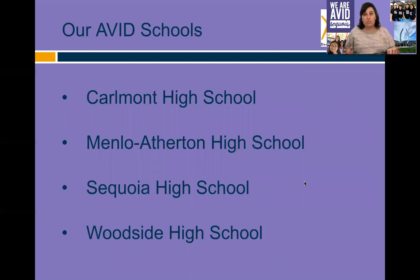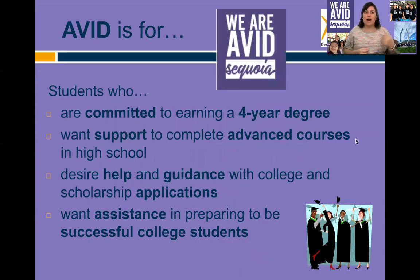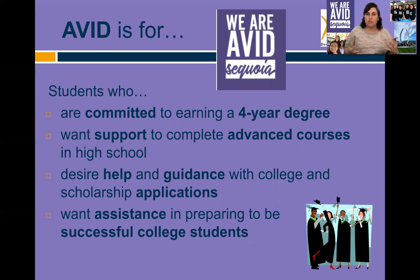In the Sequoia Union High School District, if you want to take AVID as an elective, the four high schools where you can do that are Carlmont, Menlo Atherton, Sequoia, and Woodside. AVID is for students who are committed to earning a four-year degree, who want support to complete advanced courses in high school, and who want help and guidance with the college and scholarship application process. They want assistance in becoming not just good college students, but successful college students.